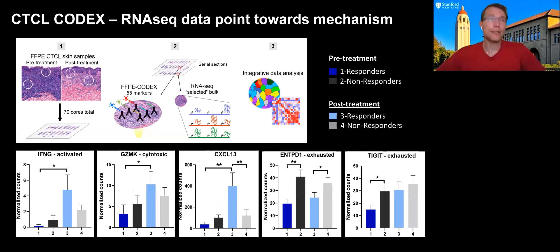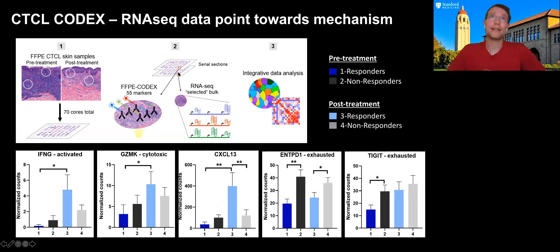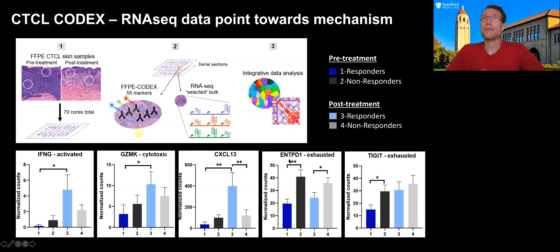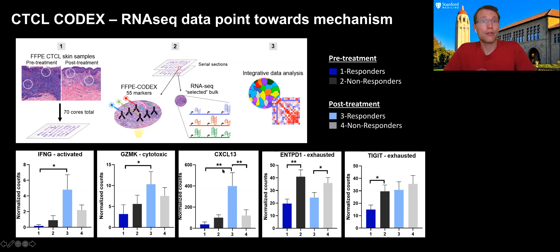We also performed RNA sequencing on laser-capture microdissected TMA cores, finding that interferon-gamma and activation markers including CXCL13 — a chemokine directing CD4 T-cell migration — were upregulated in responders, while suppressive markers like CD39 and TIGIT were upregulated in non-responders. We are currently performing CIBERSORTx analysis to better understand the cell-type-specific origin of these gene expression differences.